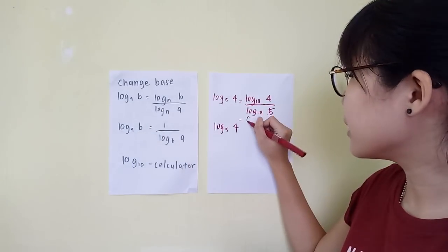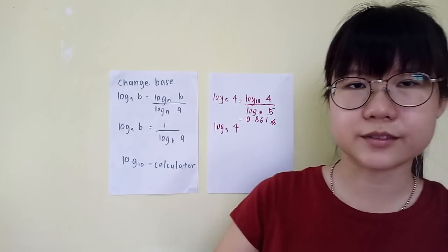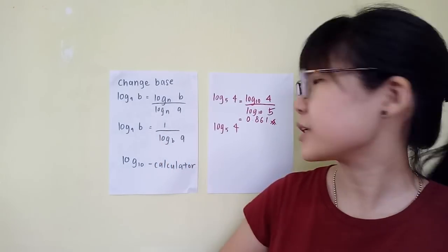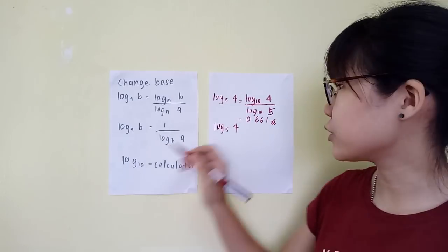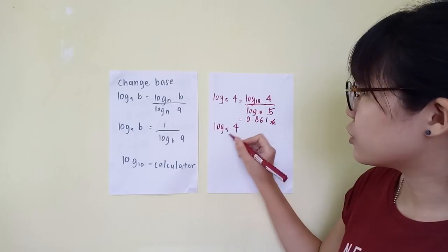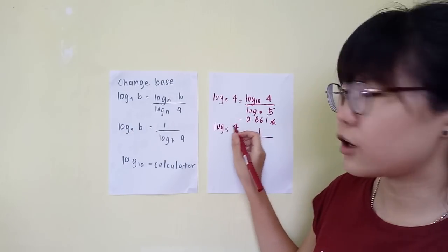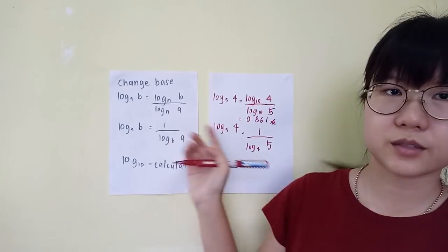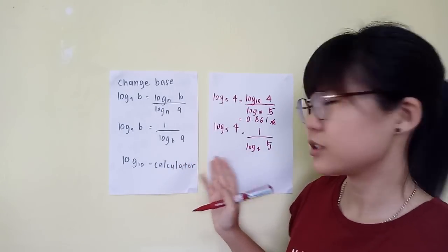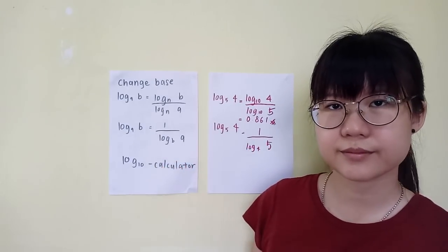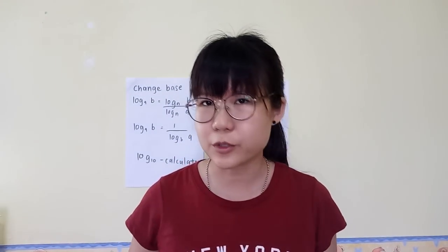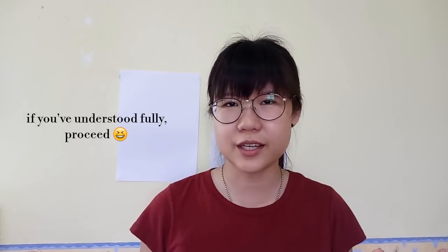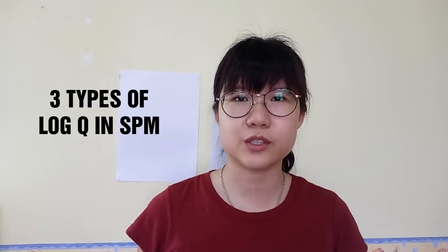The next technique is for changing the base when it comes to 1 over something. So you have log base 5 of 4, and you want to change the base — maybe to log base 4. You can just write 1 over log base 4 of 5. The 4 is big here so you make it small, and 5 becomes big. It's as simple as that. This is one of the techniques you can use to solve the question. I've now covered all the basic things you need to know in order to solve logarithm questions. If you've understood fully everything, then we can proceed into the 3 types of log questions.